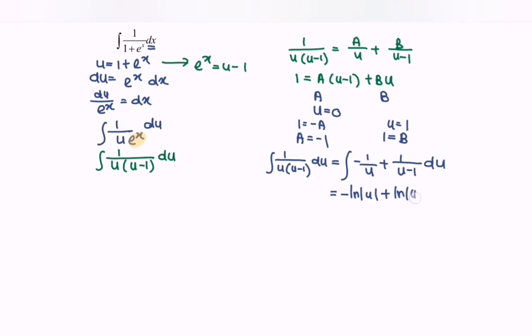So finally, integrate 1 over 1 plus e to the x dx, and we will have negative ln where u is 1 plus e to the x.